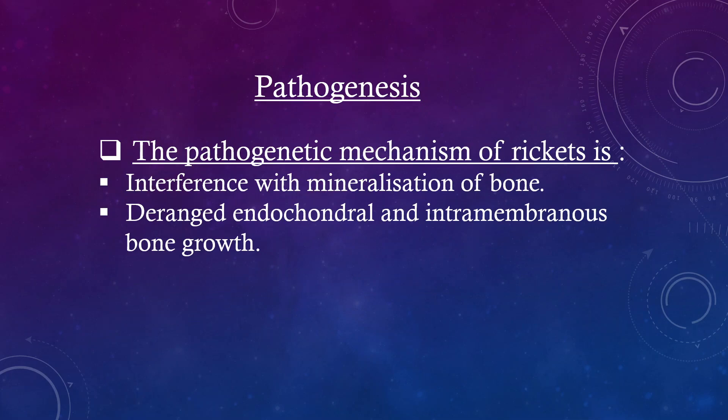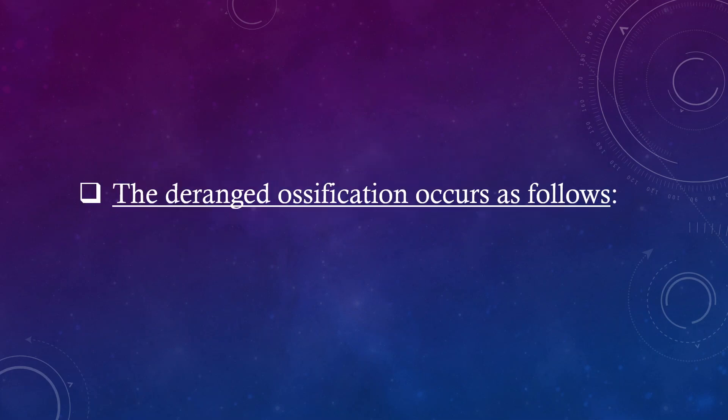Pathogenesis. The pathogenetic mechanism of Rickets is interference with mineralization of bone, deranged endochondral and intramembranous bone growth. The deranged ossification occurs as follows.